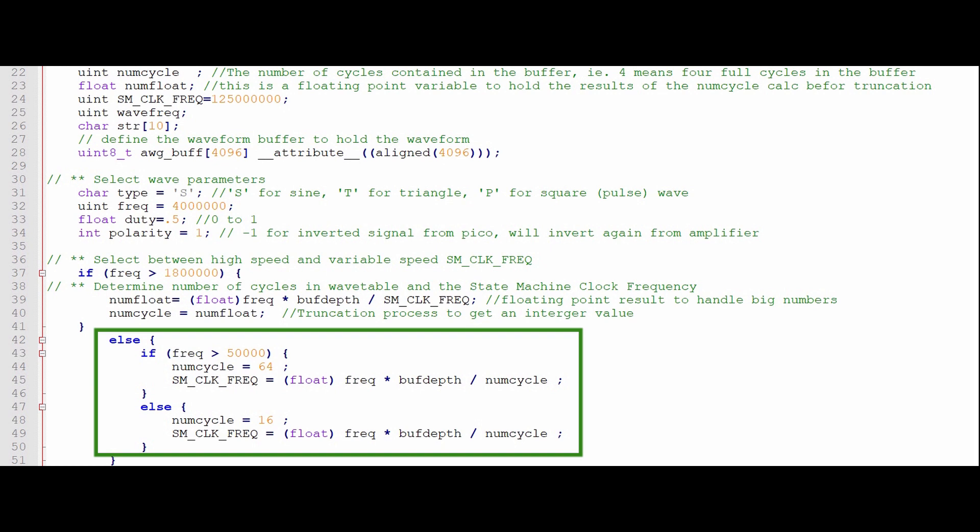I added a switch to allow for very low frequencies to be generated. The high frequency method is to set the state machine clock cycle to the system clock frequency of 125 megahertz